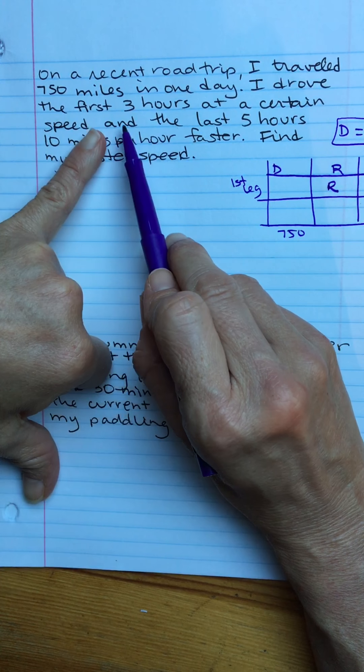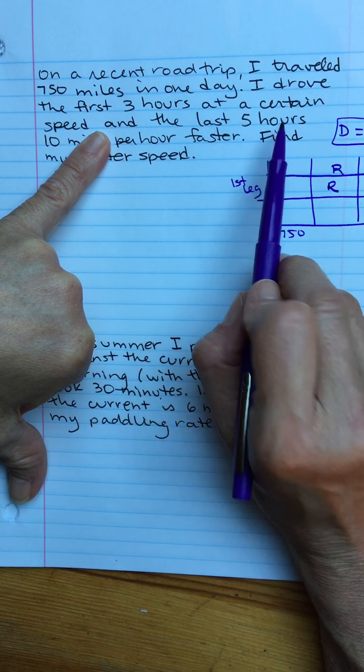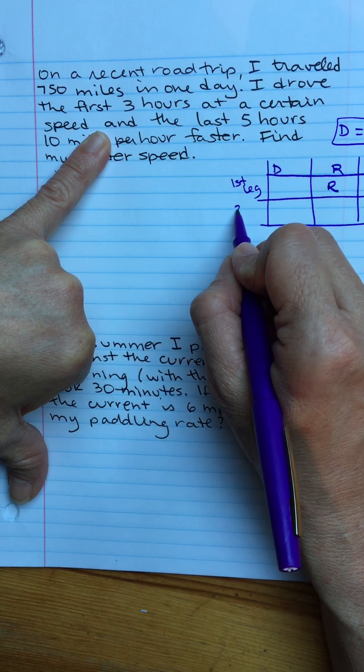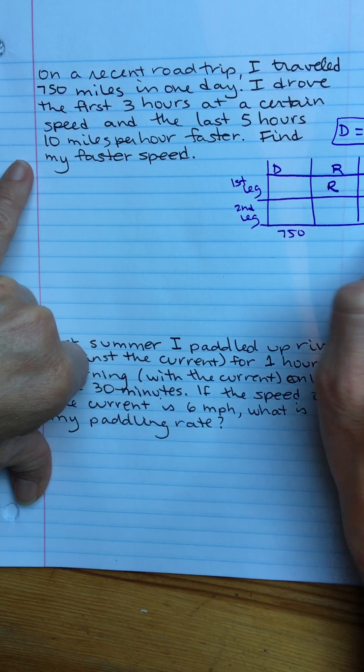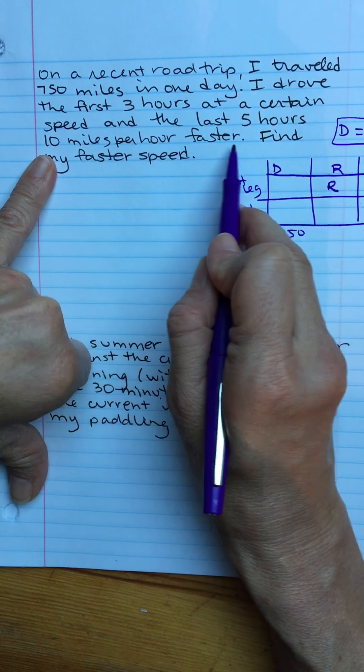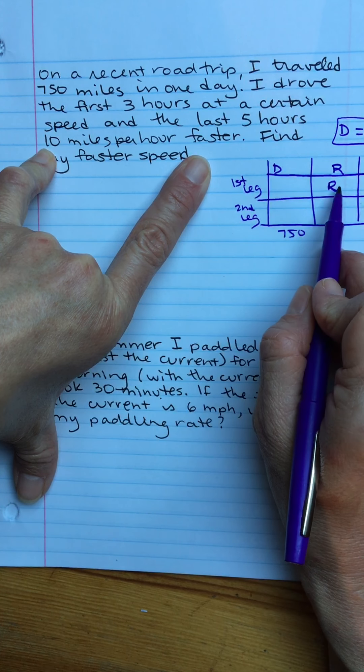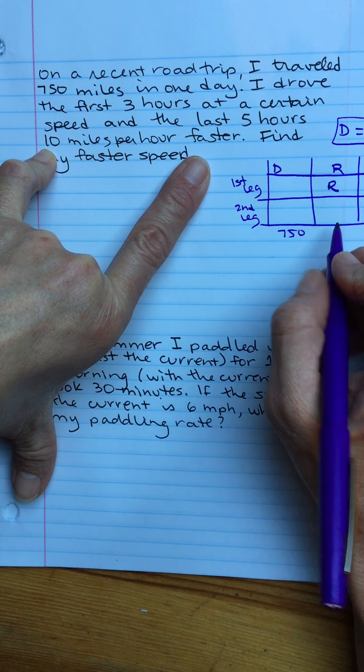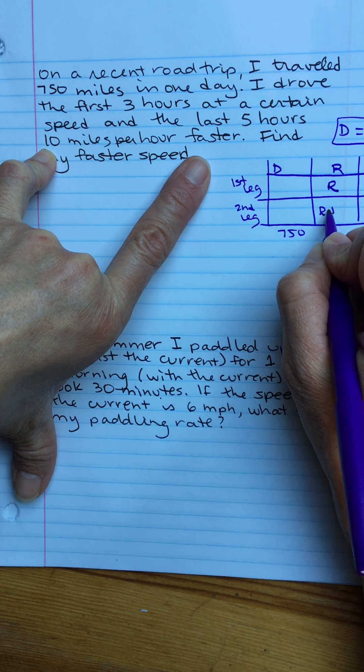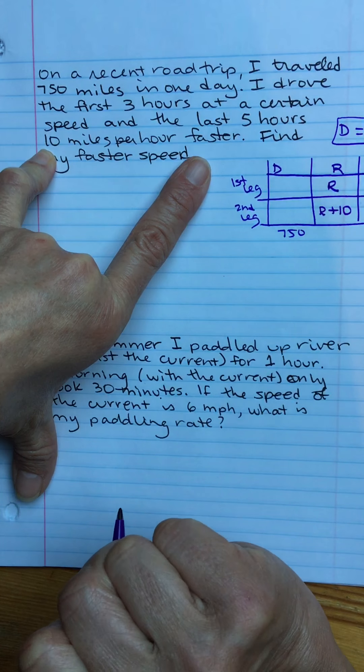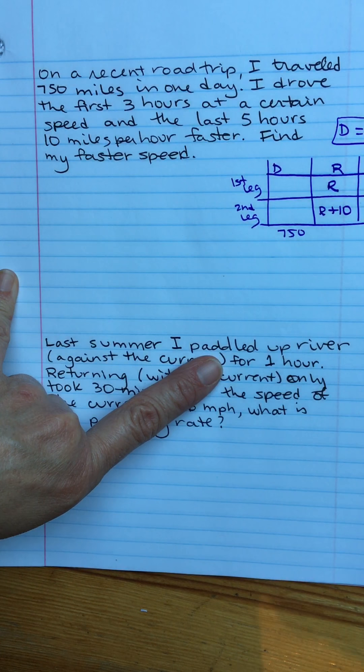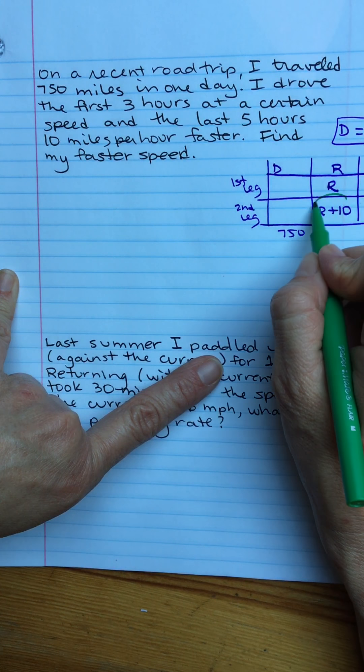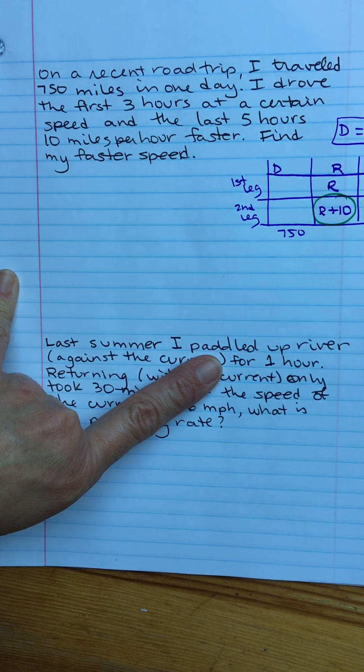And the last five hours, so there's the second leg. Five hours is how long I did it. 10 miles per hour faster, so that's faster than I was before. So if this was an R this would be R plus 10. Find my faster speed, so the thing I want to find, circle it in green. That's the value I need.